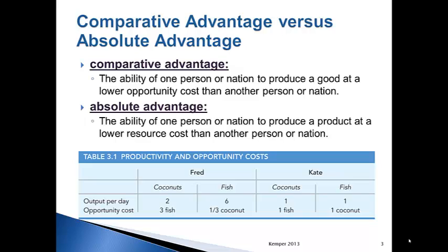If you look at Table 3.1, which you can also find in your book, you will see two people and their various abilities to collect coconuts or catch fish. They could specialize in either or. Fred can collect two coconuts while Kate can collect one coconut. Two is greater than one, therefore Fred has an absolute advantage over Kate when it comes to specializing in coconuts. When fishing, Fred also has an absolute advantage because he can catch fish at a rate of six per day, while Kate can only catch one fish per day. Therefore, Fred has the absolute advantage in both coconuts and fish.